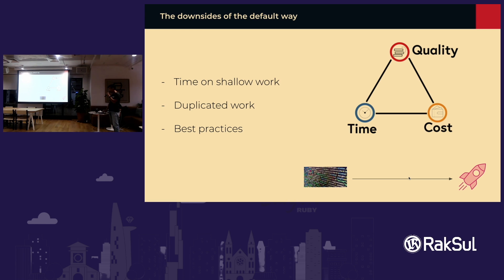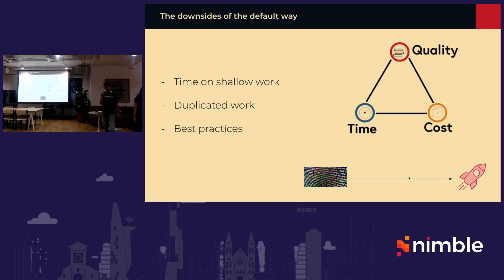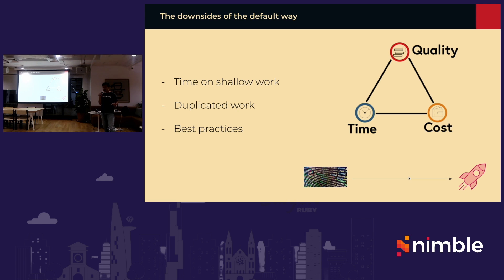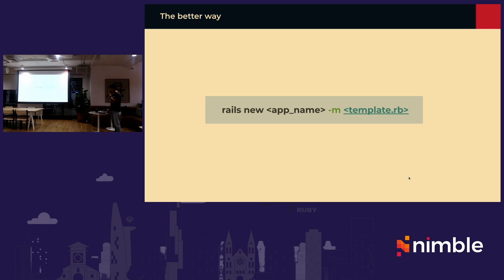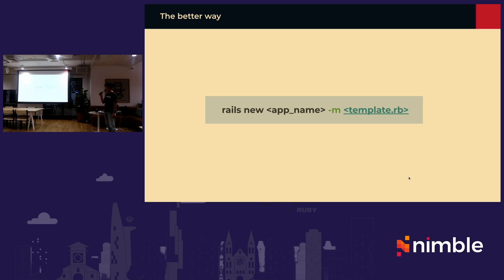The better way — when we talk about Rails as a web framework like Symfony or Laravel — is to think about what makes Rails different from others. I think it is about productivity: getting things done faster with less effort compared to other frameworks. That is the most important aspect of Rails. The solution uses the same command as before but adds one more parameter: `-m` and the template file.